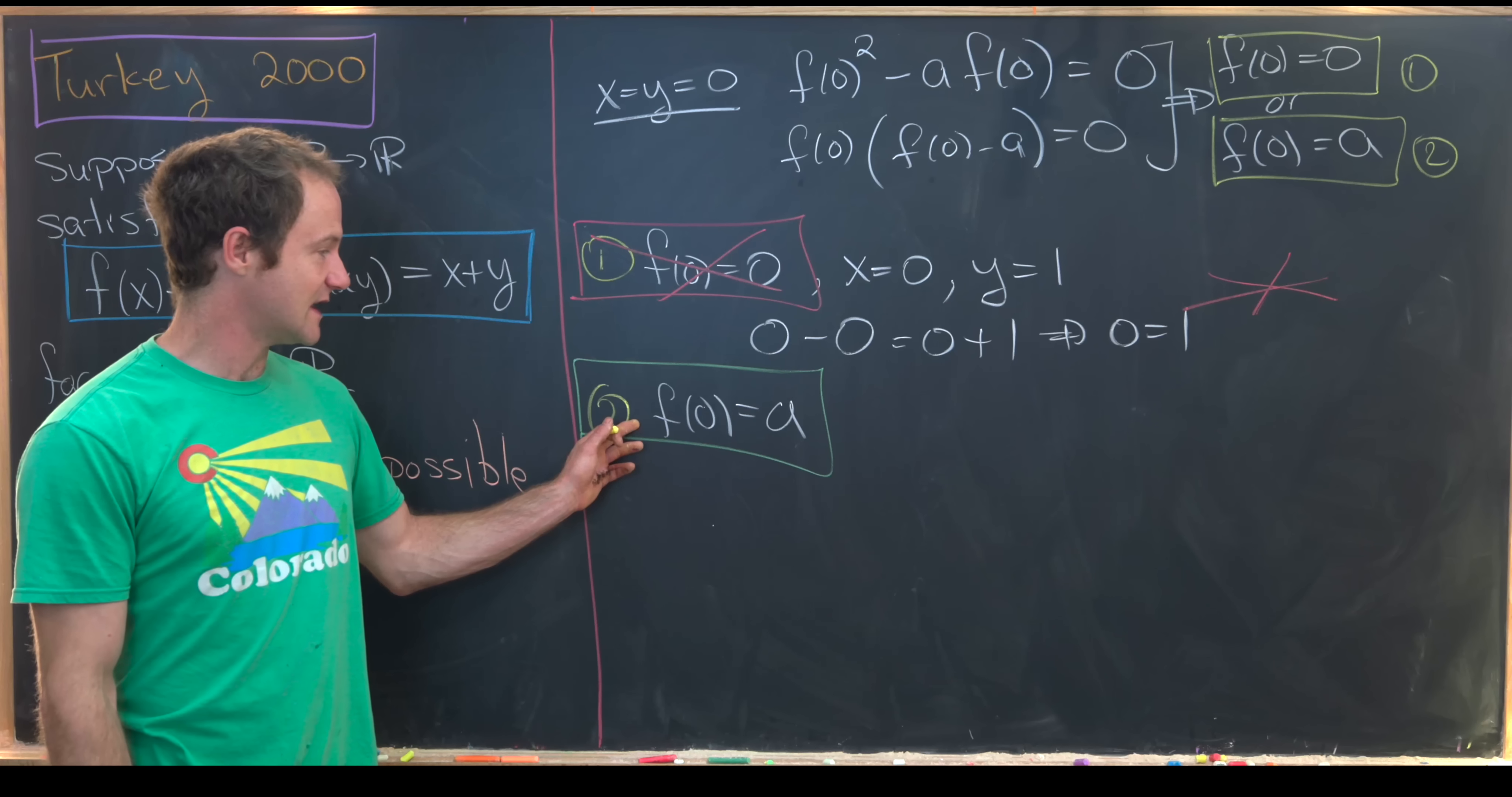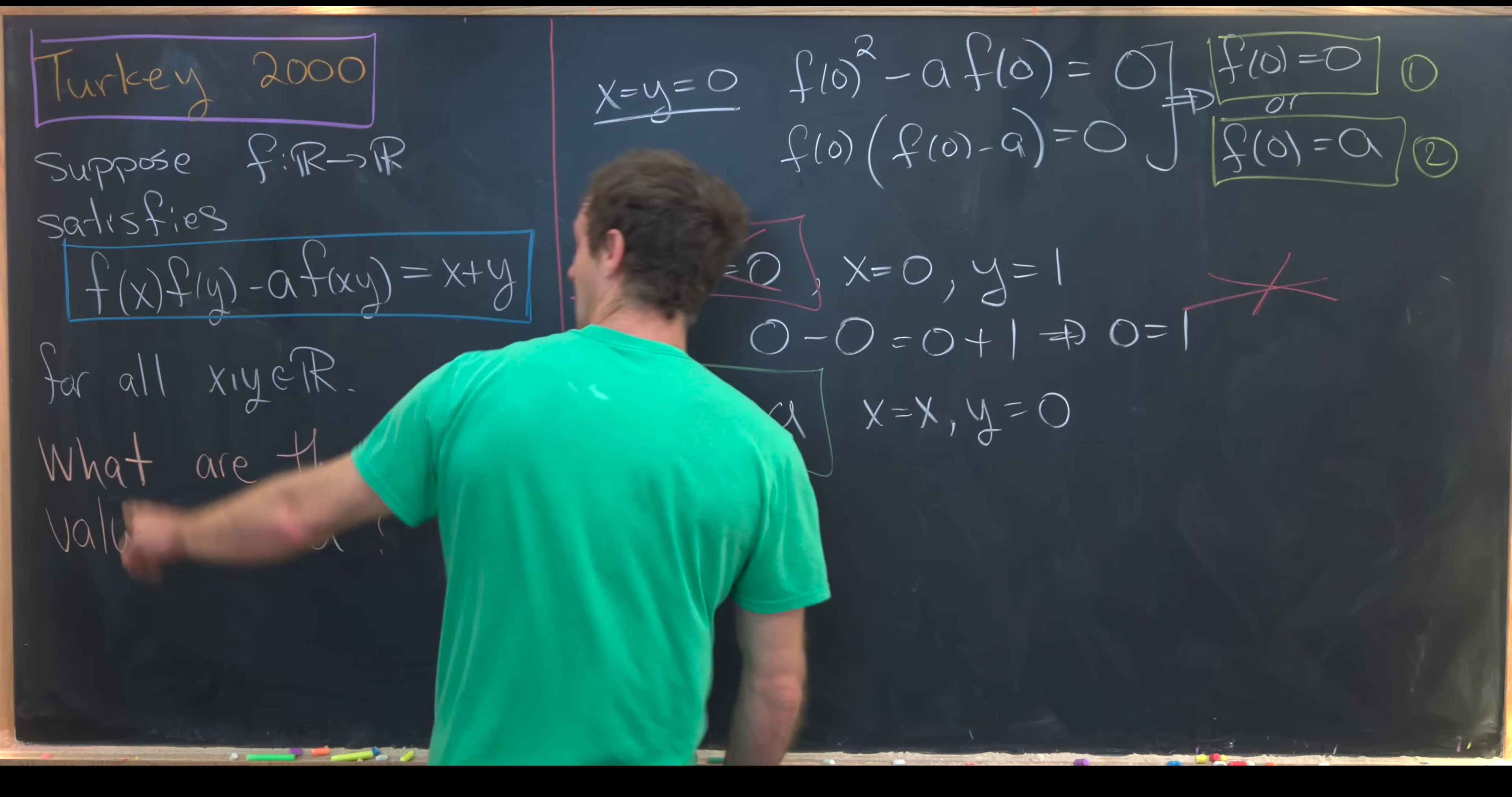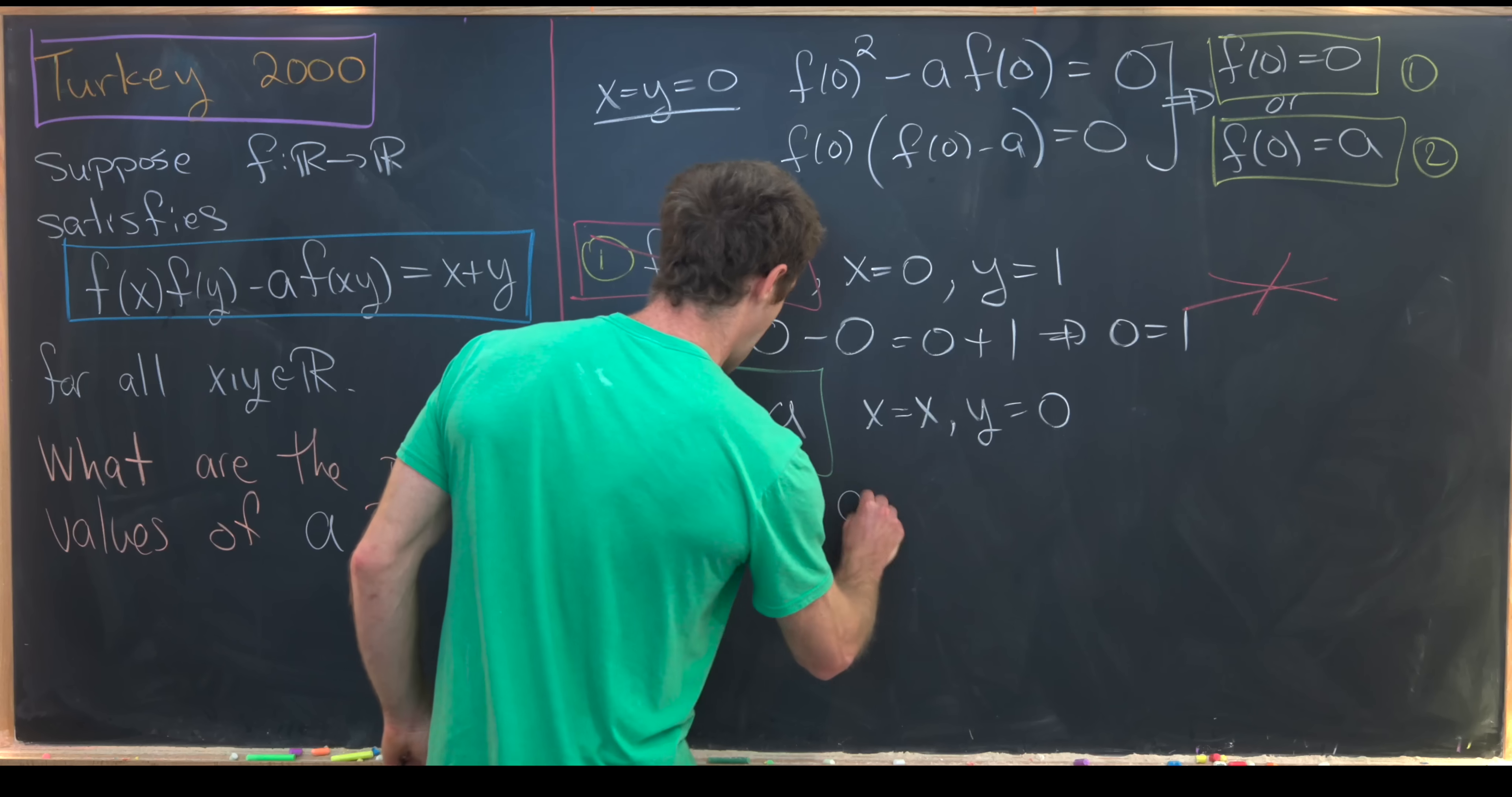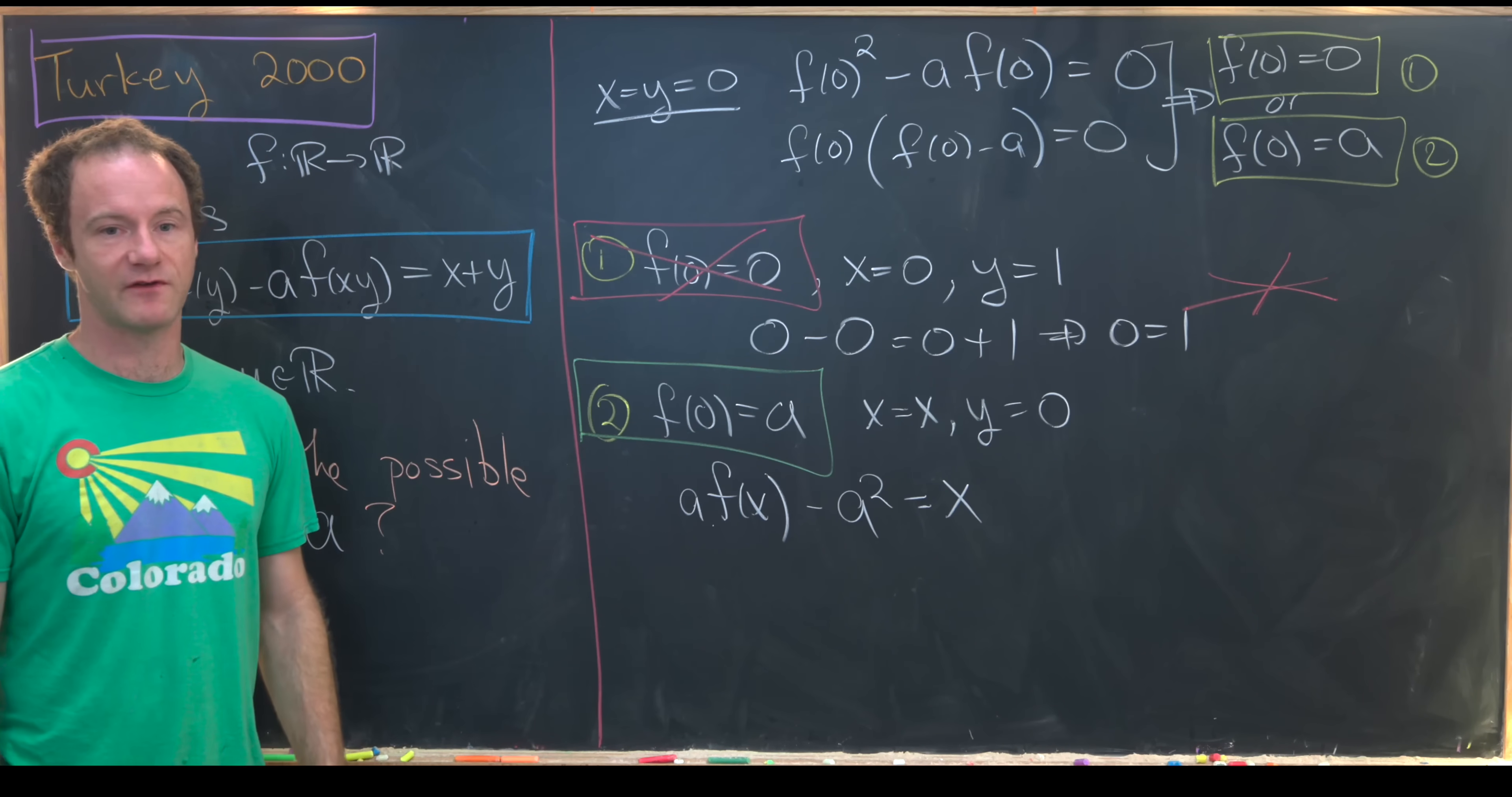So now taking this, let's plug in x equals x. In other words, we're going to leave x free and take y to be zero. So I'll just write that as x equals x, and then we'll take y to be equal to zero. So what does that give us? That gives us f(x) times f(0). But notice f(0) is a. So that gives us a times f(x) for this first term. And then we'll have minus a times f(0). But remember f(0) is a. So we've got minus a^2 is equal to x plus zero, but that's just x.